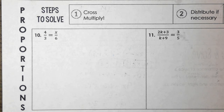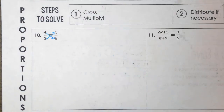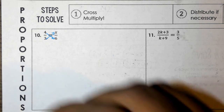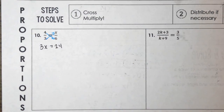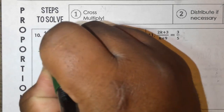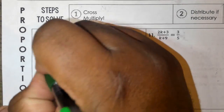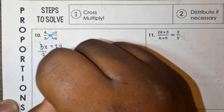The first proportion, number 10, is an easy one: 3/4 = x/6. Cross multiply: 3 times x = 3x, equals 4 times 6 = 24. Then solve this one-step equation — divide by 3 on both sides — x = 8.